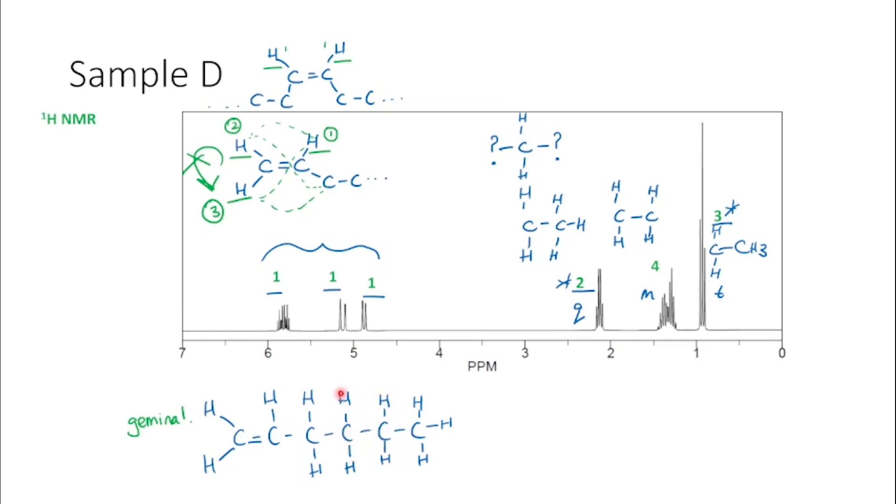This carbon or these hydrogens here are next to one, two, three, four. So we would expect these hydrogens to be a quintet. And then these hydrogens here are next to one, two, three. So we would expect it to be a quartet. We have a quartet signal here. So this would be these protons, which means that these protons are in this multiplet we see at about 1.4.